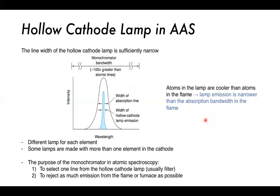The line width of the hollow cathode lamp is sufficiently narrow — usually narrower than what the monochromator can resolve. The blue line represents the width of the hollow cathode lamp emission, while the broader line represents the absorption bandwidth in the flame. Atoms in the lamp are cooler than atoms in the flame, so lamp emission is narrower than the absorption bandwidth due to less Doppler broadening and less collision broadening at lower temperatures.